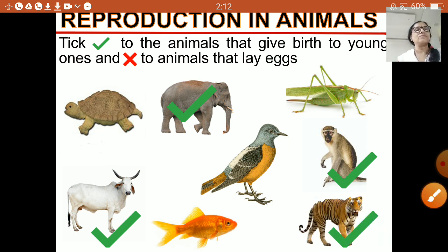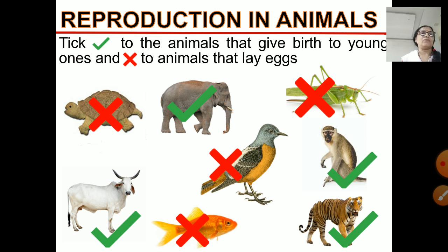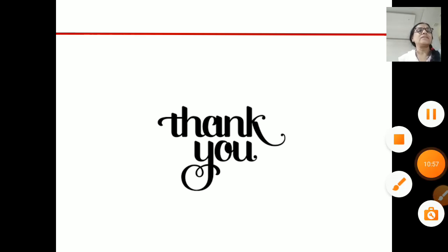The animals marked with a cross reproduce by laying eggs, while the animals that are ticked reproduce by giving birth to their young ones. Now you will remember that some animals give birth to their young ones, while some reproduce by laying eggs. Hope you have understood. In the next part, we will study more about the animals that lay eggs. Till then, take care and thank you.